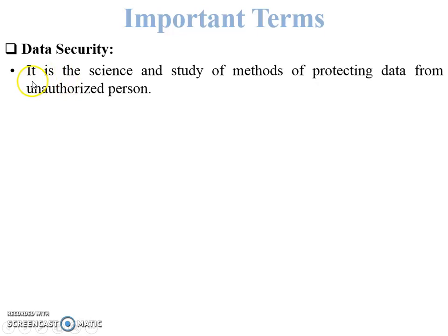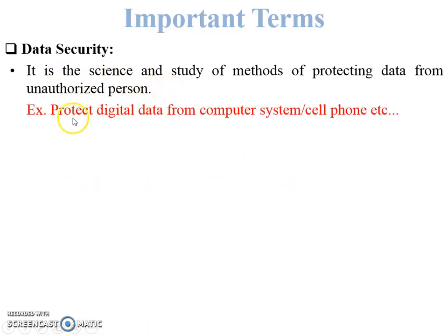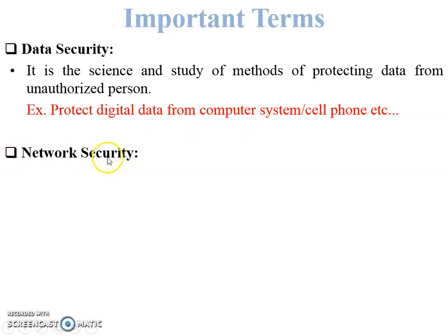The definition of data security: it is the science and study of methods of protecting data from unauthorized persons — unauthorized persons means hackers or attackers. For example, protecting digital data from computer systems, cell phones, or any kind of electronic gadgets. There is a database on any kind of server, or our personal data stored in our computer system or laptop, and we have to protect this data from unauthorized users. This is called data security.